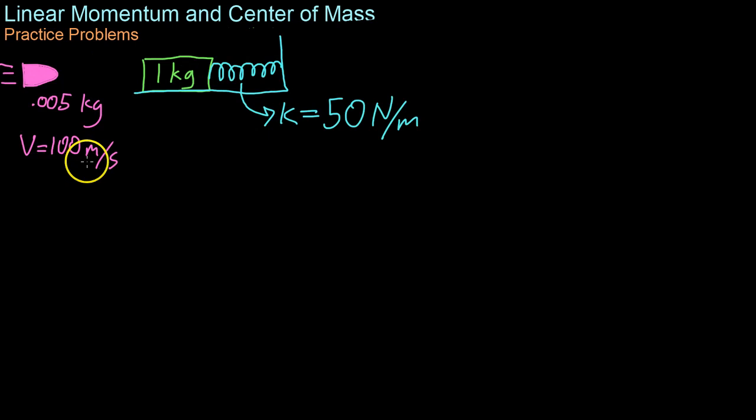So continuing now with our momentum practice, we'll look at a situation in which a bullet going 100 meters per second is fired at a 1 kilogram block attached to a 50 newton per meter spring. And what we want to know is the initial velocity of the block once the bullet has hit it and lodged in here.